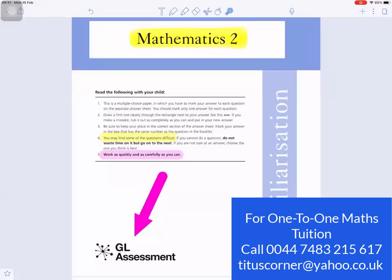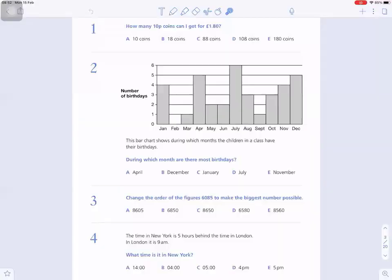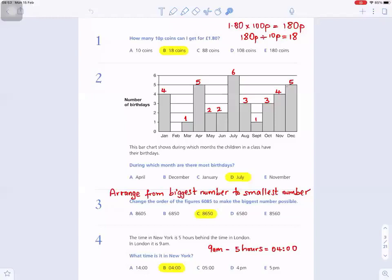Welcome to GL assessment mathematics. You may find some of the questions difficult. Work as quickly and as carefully as you can. Questions one to four: How many 10p coins can I get from one pound 80?